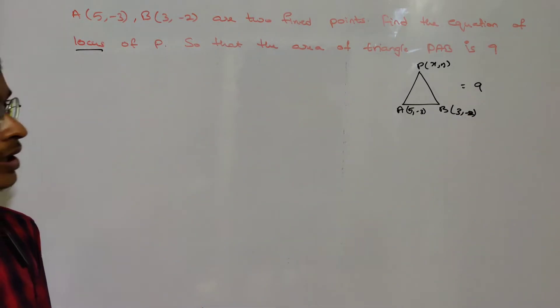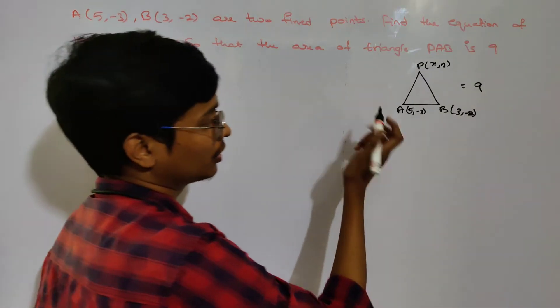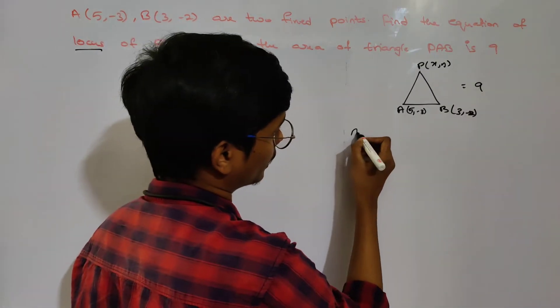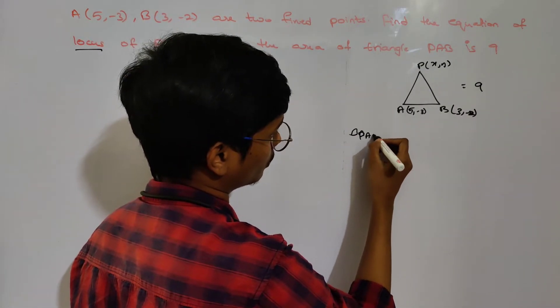We have a condition: area of triangle P, A, B. We'll use a shortcut formula for this.